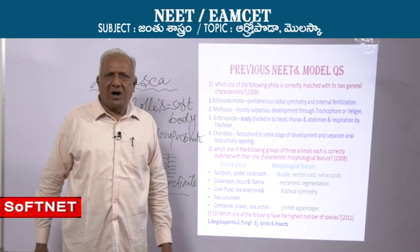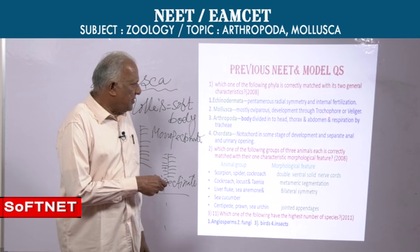Your answer is option 2 — Mollusca — because they are mostly oviparous and their development passes through trochophore or veliger.